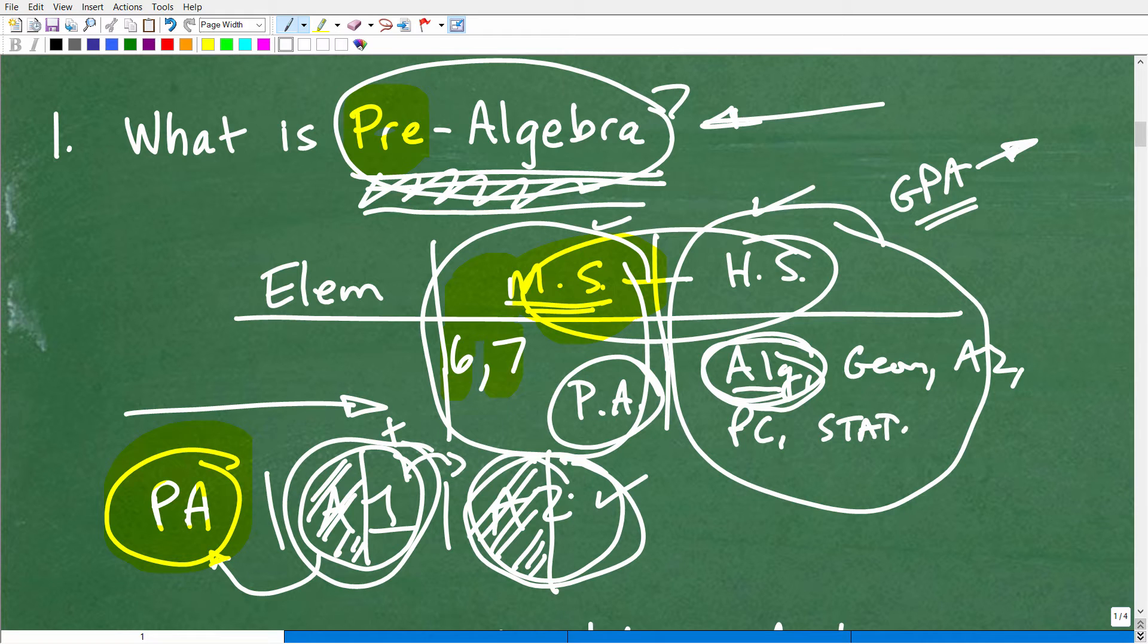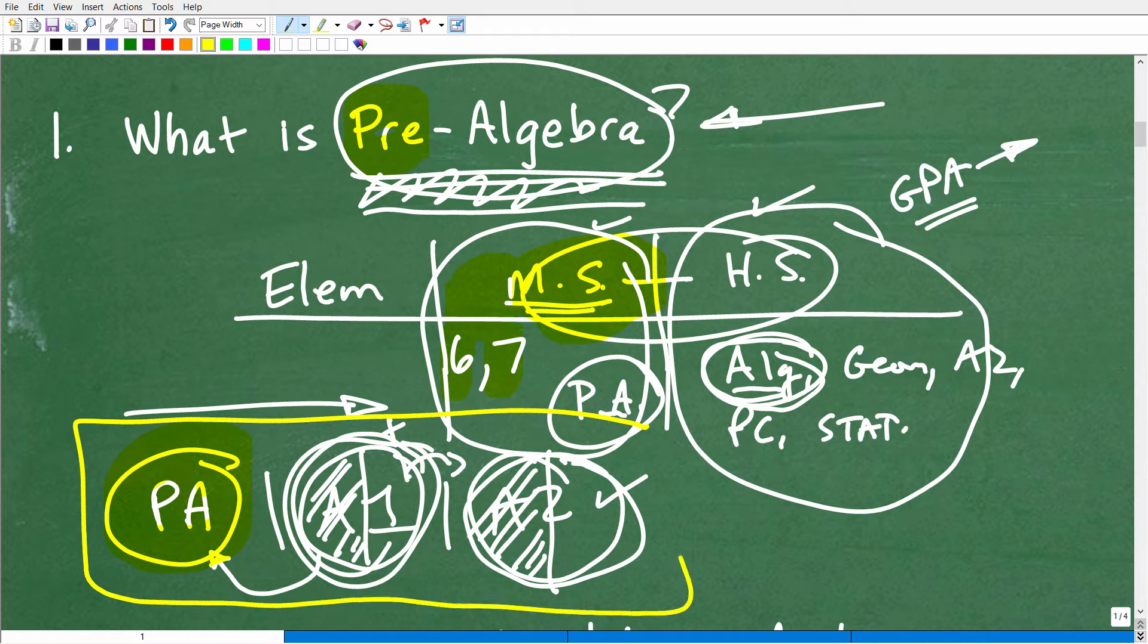And the same thing goes for algebra 2. How well students do in algebra 2 is going to be pretty related to how well students do in algebra 1. So think of this whole continuum, pre-algebra, algebra 1, and algebra 2 as one gigantic algebra course that's broken up over three years. So anyways, pre-algebra is a supercritical course and one that you really want to try to get right for your child.